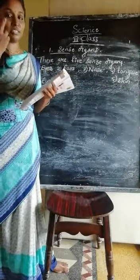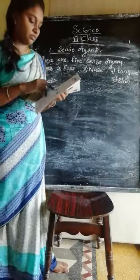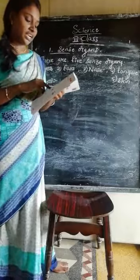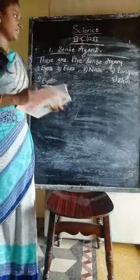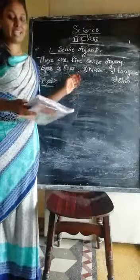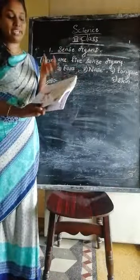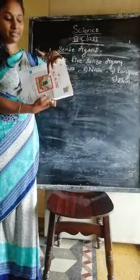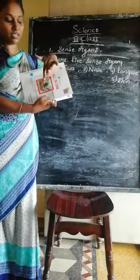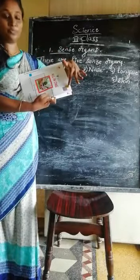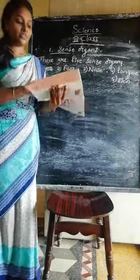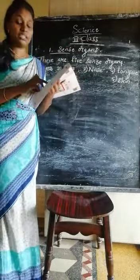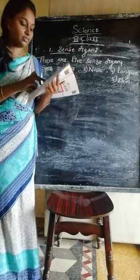Anything we can see with our eyes. We can identify colors like black, white, red, green, and yellow. Any different color we can identify with our eyes.